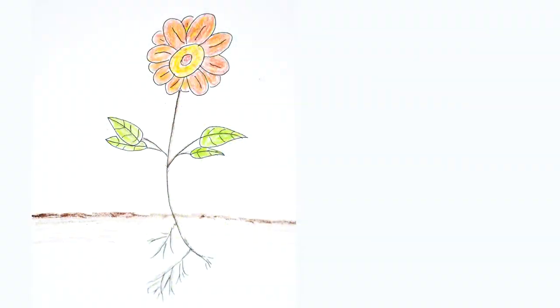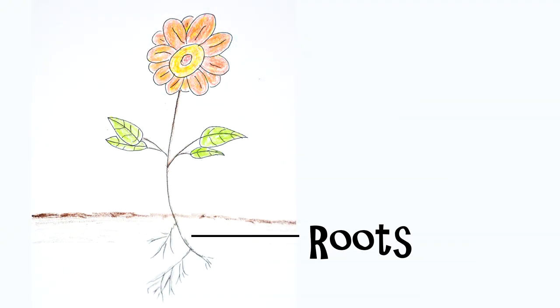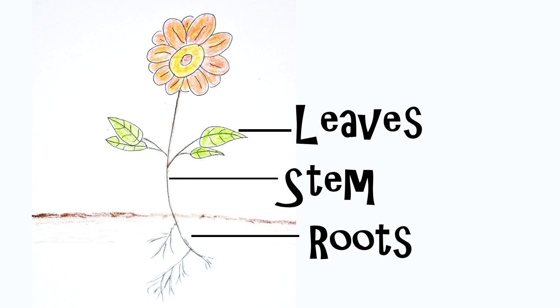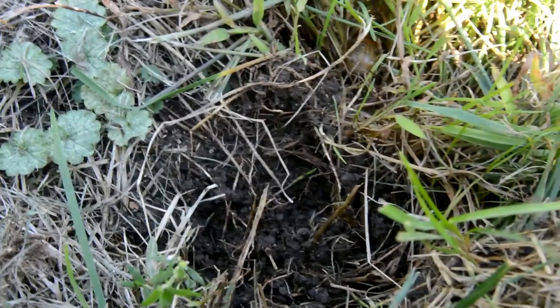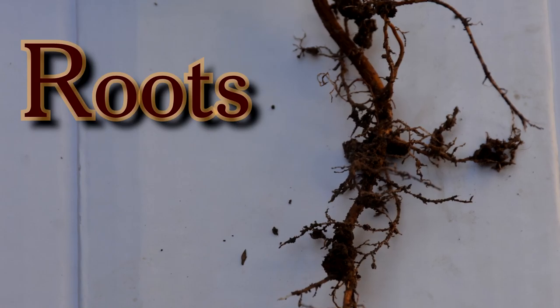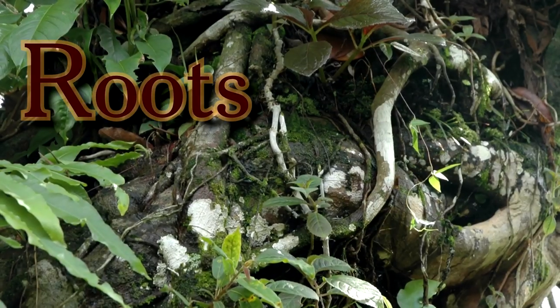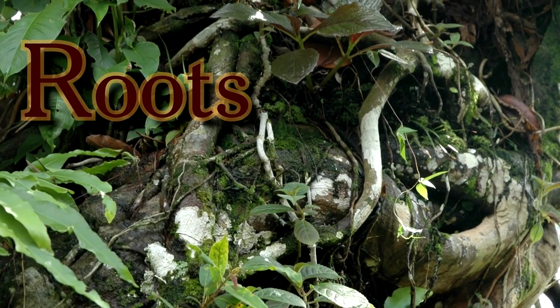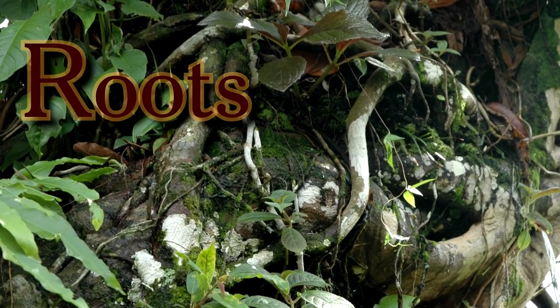The four parts of a plant include the roots, the stem, the leaf, and the flower. Roots grow into the soil and dirt and take in minerals and water. Roots also anchor and hold the plant down to the ground.